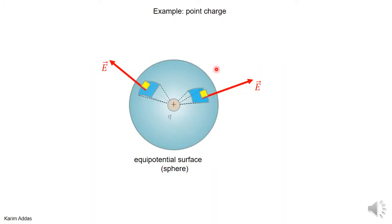If we go to the point charge case, the equipotential surfaces for a point charge are spheres. We know that the electric field is perpendicular to the surface of the sphere — it points radially outward from the charge — so it is also perpendicular to the equipotential surface.